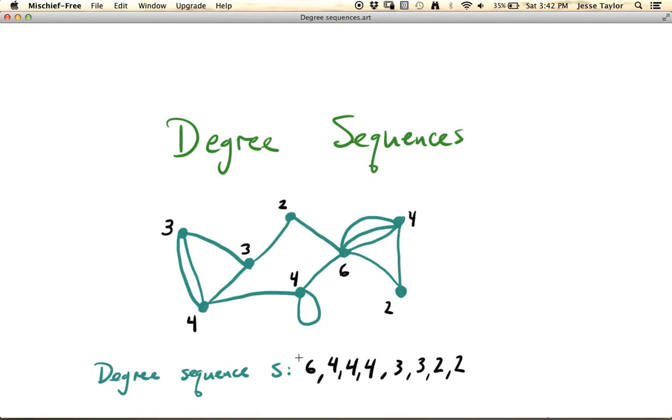So this is the degree sequence for this graph. Generally you just write them as a list separated by commas, and remember you want to start with the biggest one, so they should be non-increasing. So it's okay for numbers to repeat, but they should never get bigger as you go left to right.